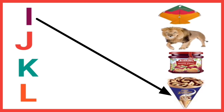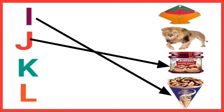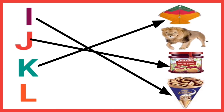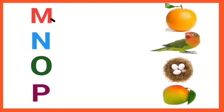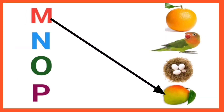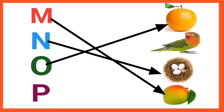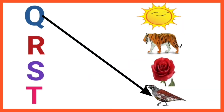I for ice cream, J for jam, K for kite, L for lion, M for mango, N for nest, O for orange, P for parrot, Q for quail, R for rose.